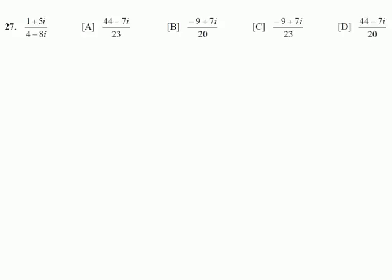Let's go to the next one. What are we going to multiply by so that we can get rid of the i in the denominator? We're going to do the complex conjugate — so we're going to use 4 plus 8i. We're going to go 4 plus 8i over 4 plus 8i, and now we're going to use FOIL to multiply.